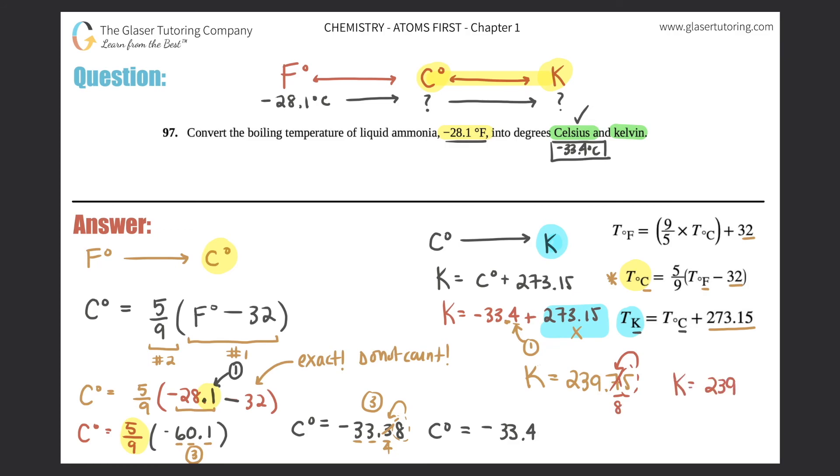Awesome! Those are your two temperatures, technically three of them if you count the -28.1°F, and just know that they're all equal to each other. They're just three different scales, so it's still the same temperature, they're just in different units. All right guys, hope this helped. If it did, click the like button, let us know down in the comments, and I will see you all in the next question. Have an awesome day!